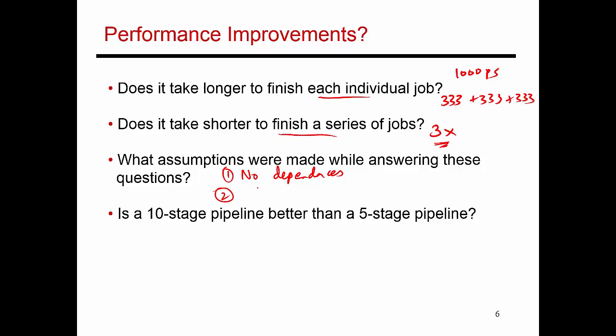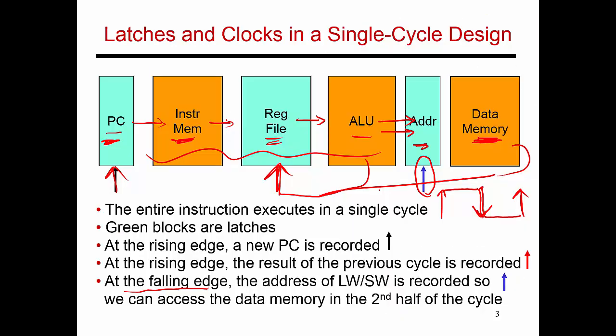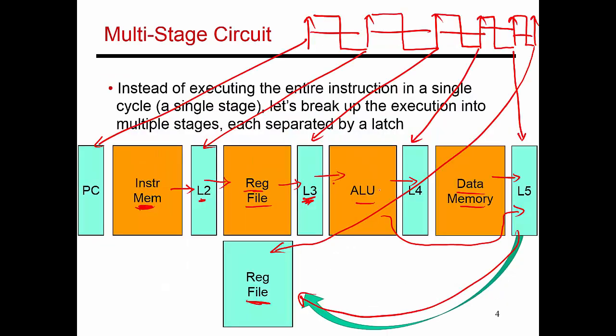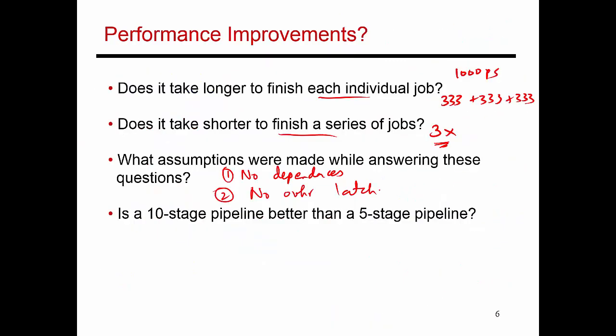The second assumption is that there is no overhead from a latch. In a five-stage pipeline, you need a latch separating every pair of stages, and these latches don't come for free — they consume energy and add latency. Once you account for latch overhead, a three-stage pipeline would not take 1,000 picoseconds; it would take more, say an extra 50 picoseconds to latch the first result, another 50 to latch the second, and so on. So it does take longer to finish each individual job and consumes more energy. This is something we've idealized so far.